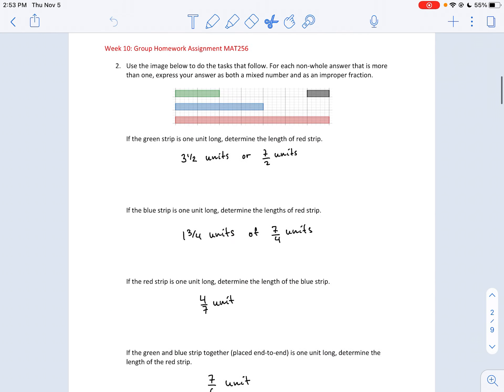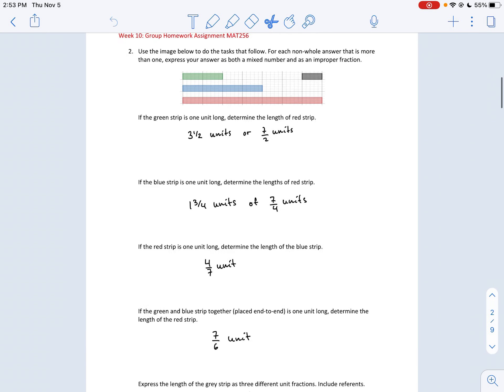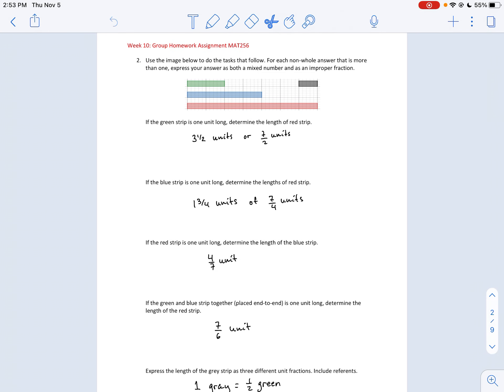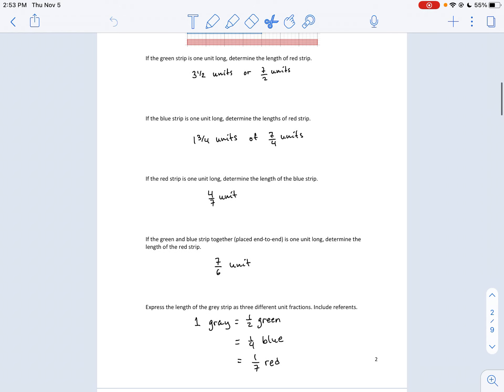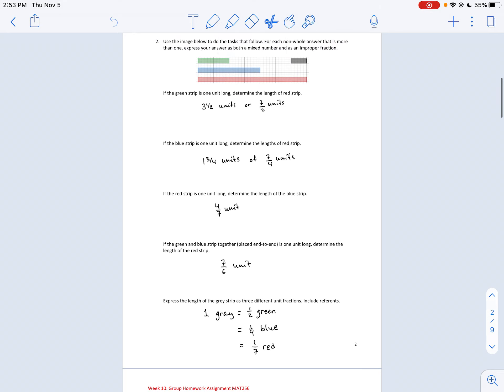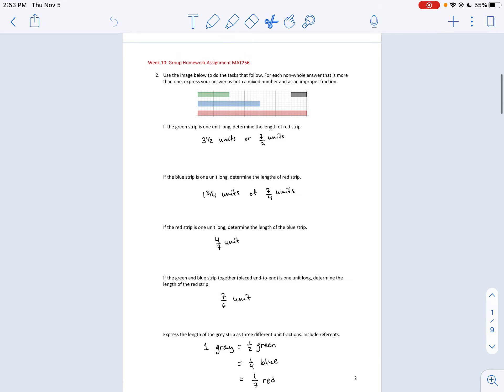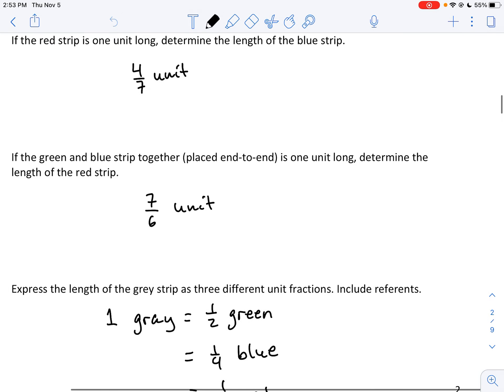Question number two. I think most people did pretty well with question number two. It was just a question as to who explained or justified their work well and who did not. I noticed I did not follow my own instructions right here. I said to if you do have an improper fraction write it as a mixed number as well. So I should probably have written this one as one and one-sixth unit.